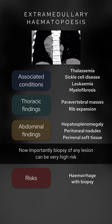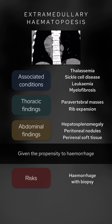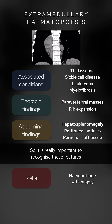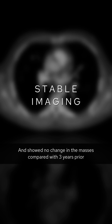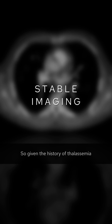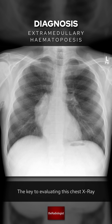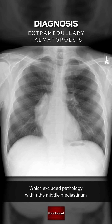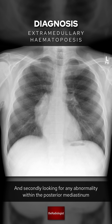Importantly, biopsy of any lesion can be very high risk given the propensity to hemorrhage, so it is really important to recognize these features whenever you have a condition that can predispose to extramedullary hematopoiesis. In this case, an external scan from abroad was sourced and showed no change in the masses compared with three years prior, so given the history of thalassemia the findings were attributed to extramedullary hematopoiesis. The key to evaluating this chest x-ray was firstly recognizing the hilum overlay sign, which excluded pathology within the middle mediastinum, and secondly looking for any abnormality within the posterior mediastinum that can point you away from an anterior mediastinal mass.